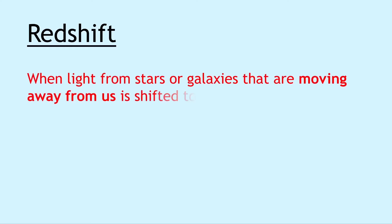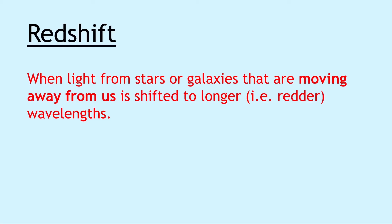Related to the Doppler effect is redshift. And this is when light from stars or galaxies that are moving away from us is shifted to longer i.e. redder wavelengths. And remember this doesn't mean that the light necessarily becomes red. It just means that it moves towards the red end of the visible spectrum. And redshift is an example of the Doppler effect for light.